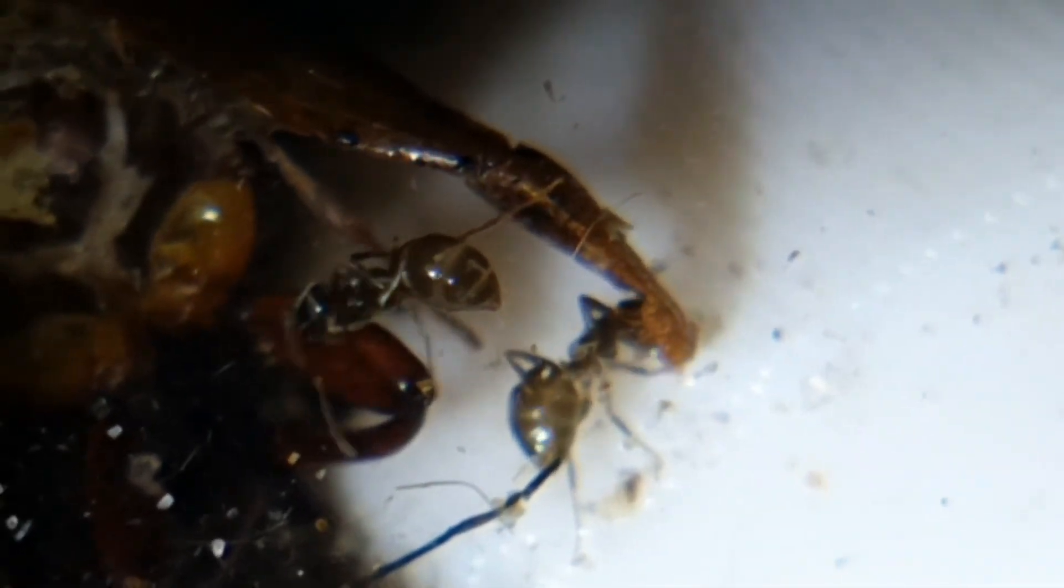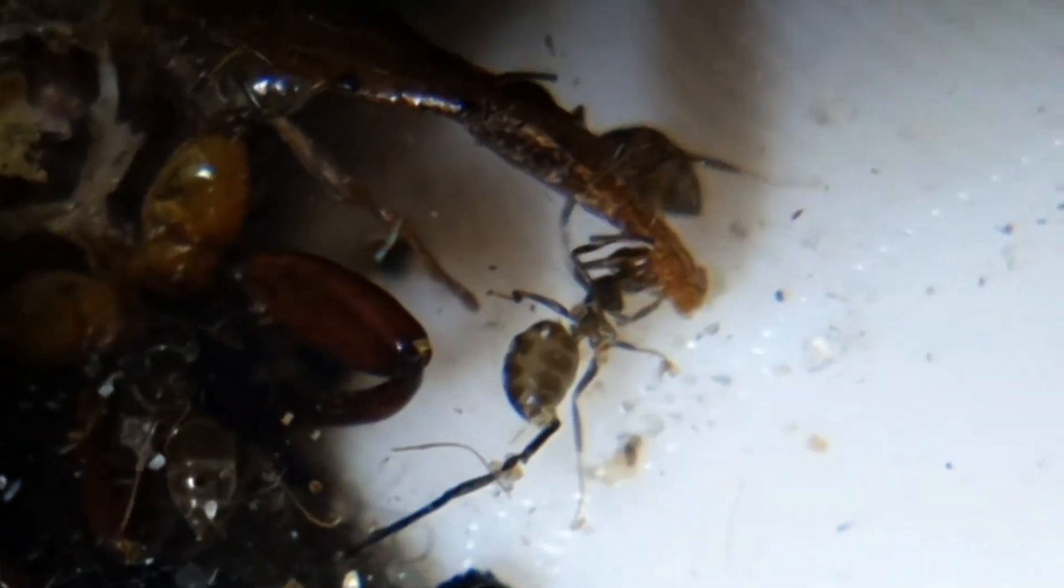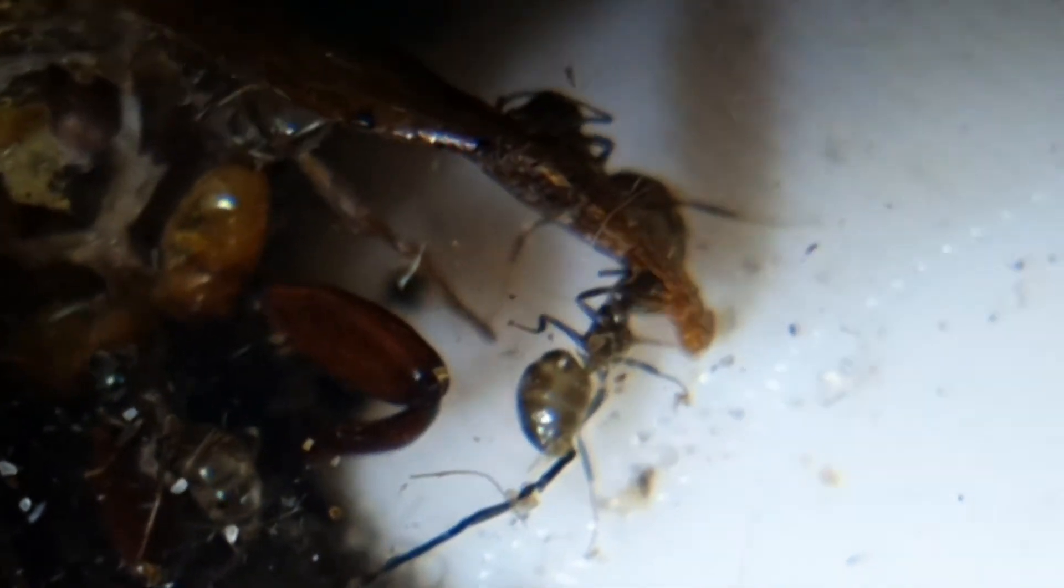I think that keeping the sugar source there permanently is a good idea because you can see the full gasters everywhere where they're all extended and somewhat transparent. They're all full of fluids, sugary fluids. And I think that's helping with the reproduction rate.